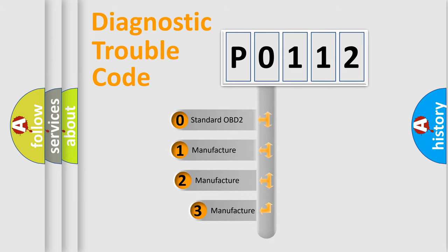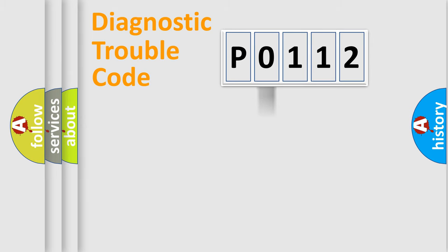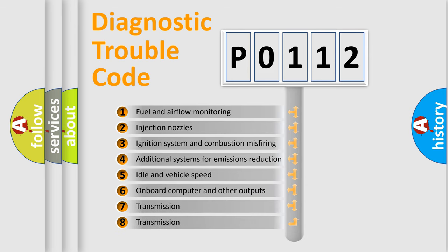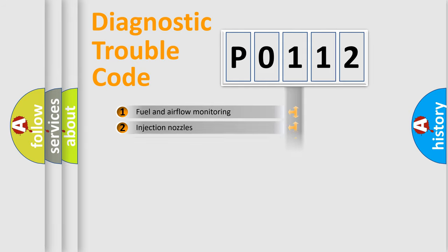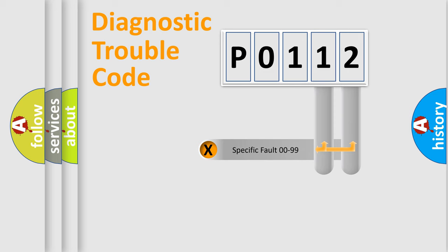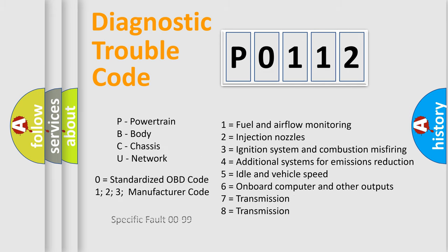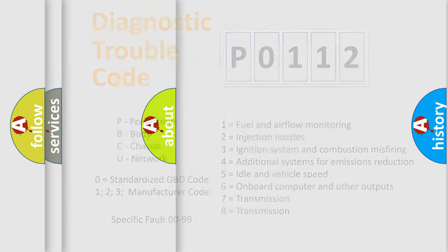If the second character is expressed as 0, it is a standardized error. In the case of numbers 1, 2, or 3, it is a more specific expression of a car-specific error. The third character specifies a subset of errors. This distribution is valid only for the standardized DTC code, and only the last two characters define the specific fault of the group. Such a division is valid only if the second character code is expressed by the number 0.